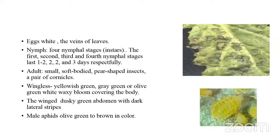The biology: eggs are white and laid along the veins of leaves. Nymphs pass through four nymphal stages, each stage similar in appearance except for increase in size. Adults are small, soft-bodied, pear-shaped insects having cornicles — wax-secreting tubes projecting out from the fifth or sixth abdominal segment of aphids.